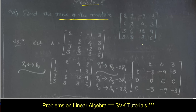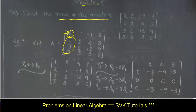Moving on to the solution — consider the given matrix. You are required to find the rank here. The leading entry should always be non-zero, and the remaining entries below should be 0. That is the concept of the first step: make the leading entry non-zero and the entries below it 0. We are applying row reduced echelon form here, making the leading entry 1 and entries below 0. For row reduced form, you are required to use only row operations.